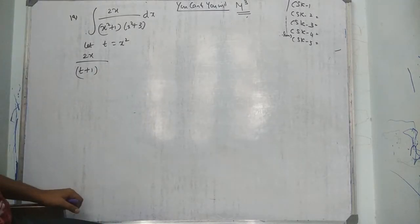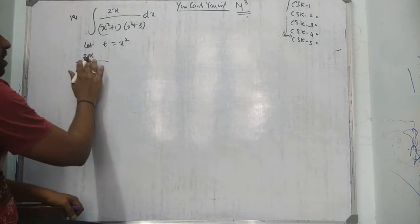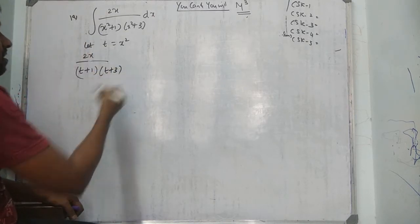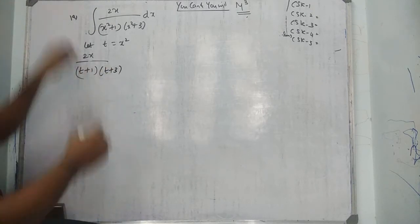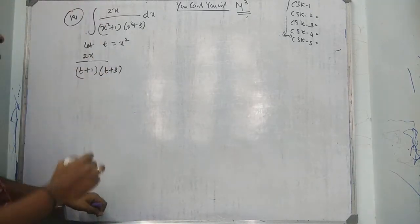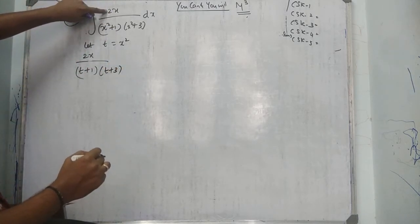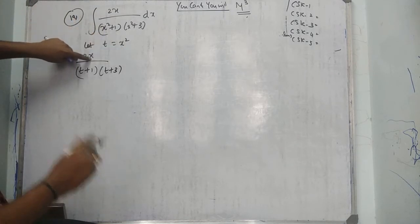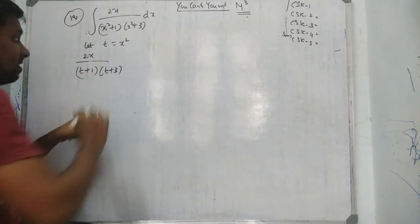If I take x² equal to t like the previous sum, the numerator 2x would remain — there are two variables, so I can't simplify directly. Question 19 is quite different because numerator 2x is present. If I change to t equal to x², numerator should vanish — but here 2x remains, so I can't simplify by partial fractions immediately.